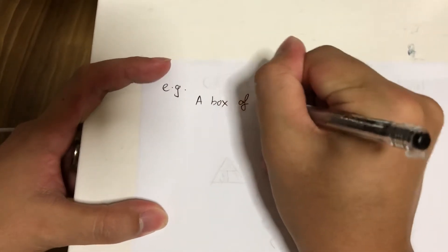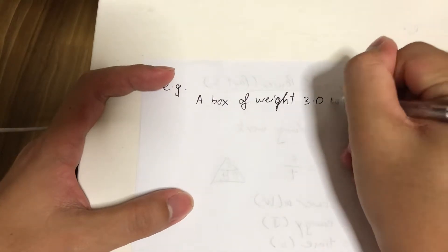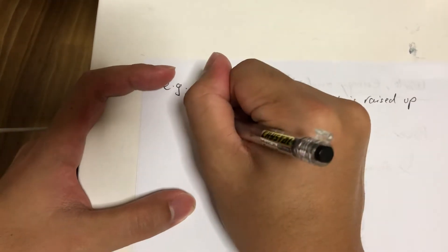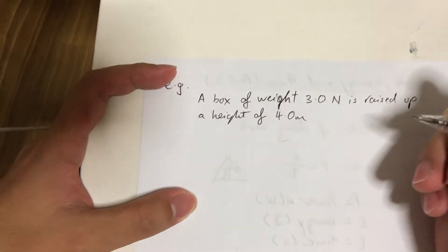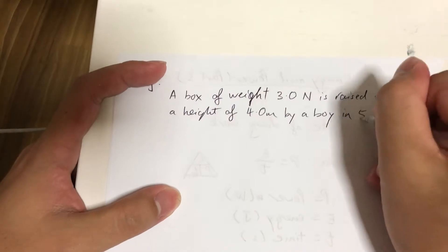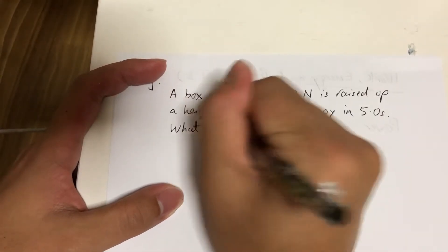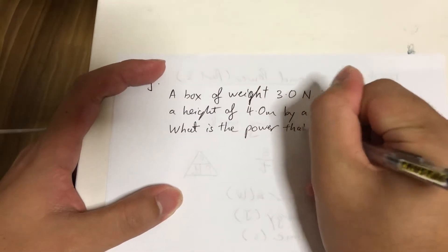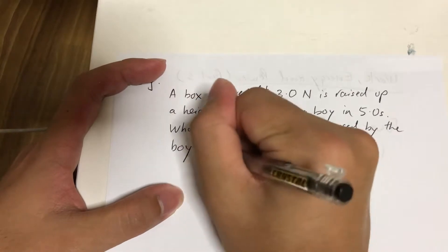A box of weight 3 newtons is raised up a height of 4 meters by a boy in 5 seconds. What is the power that was used by the boy to lift up the box?